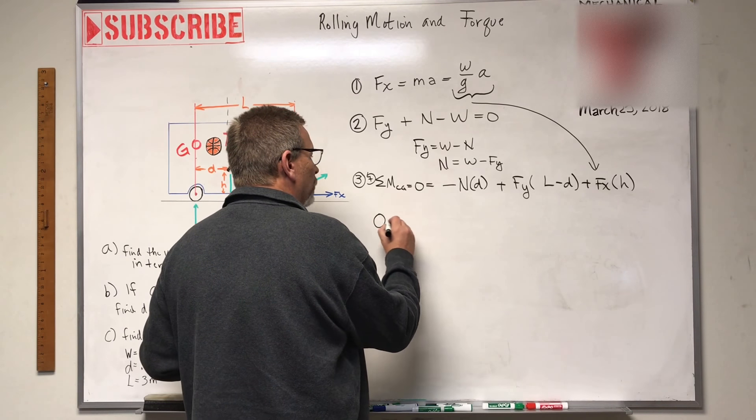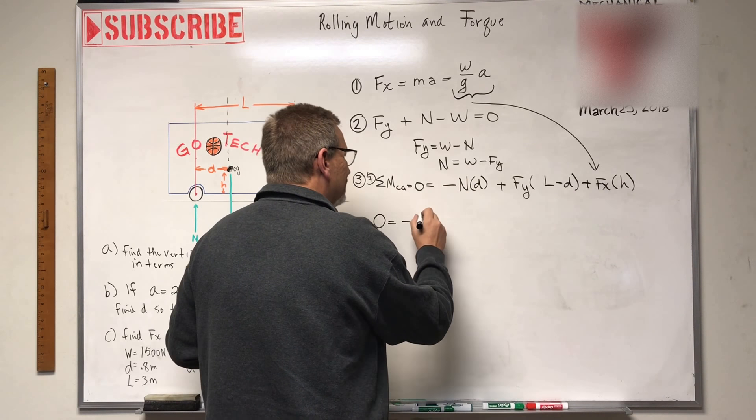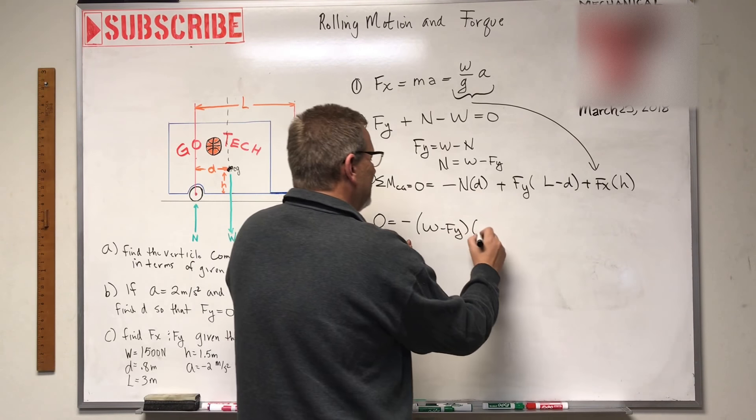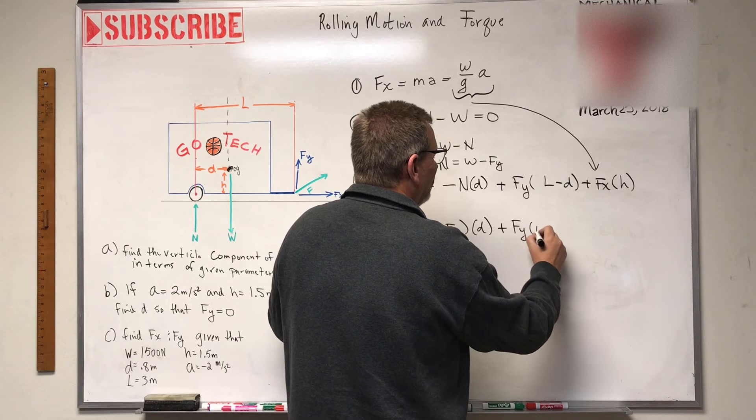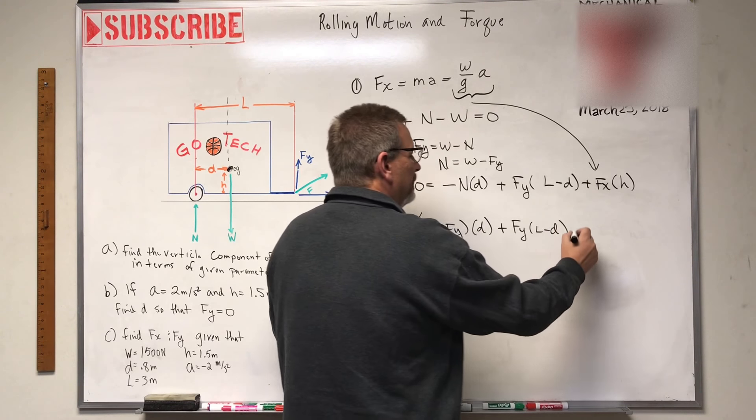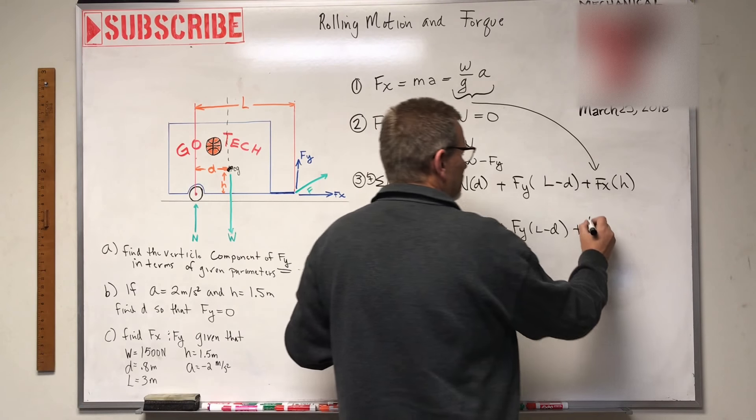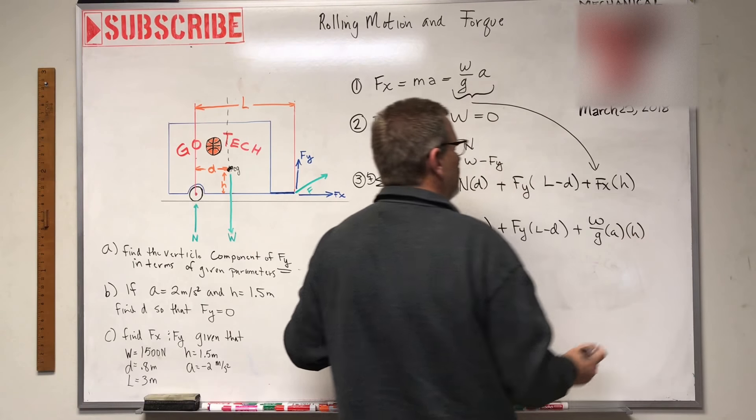So we get zero equals minus, so here comes an N. We're going to plug in here. We're going to get W minus Fy times D plus Fy times L minus D plus, and then for Fx, I'm going to plug that business there in. So I get W over G times A times all of that times H.